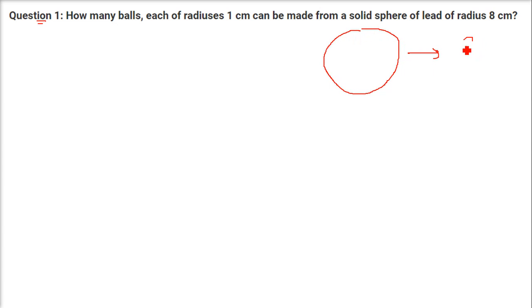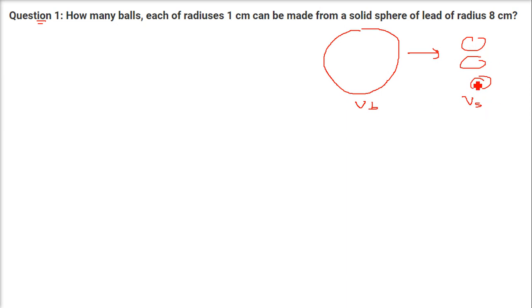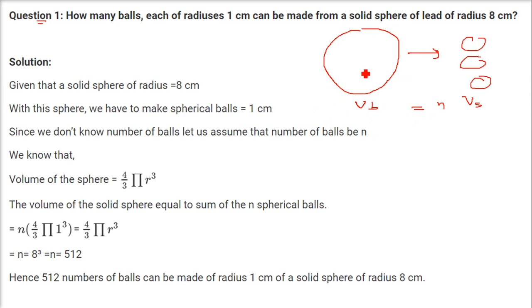So a solid sphere is there and a number of balls are being made. The volume of the bigger ball will be equal to the volume of the smaller balls — and how many are there? We don't know, so we call it N. This is the relationship we have to use. The volume of a sphere is 4/3 π r³.